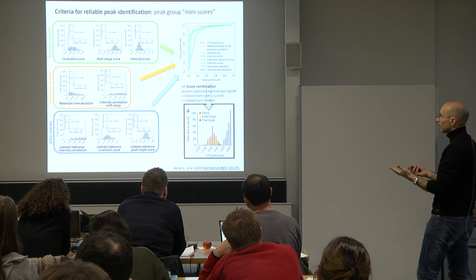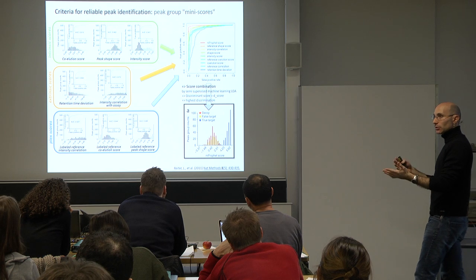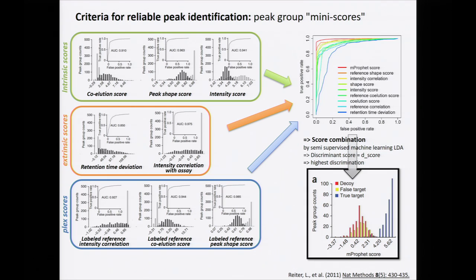The final histogram plot shows colors to help distinguish true targets from false targets. The goal is for true targets to separate as much as possible from the decoy distribution.